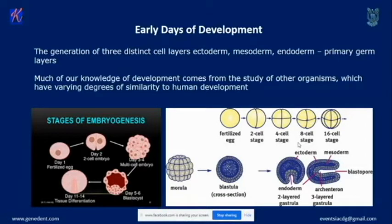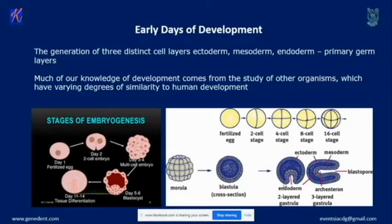Around 11 to 14 days of embryonic life, something called tissue differentiation begins. We have the ectoderm, mesoderm, and endoderm — the primary germ layers. All that we see ourselves as: hands, eyes, legs, muscles, nerves — everything you can think of in the human body starts developing from these three layers. Ectoderm is the outermost, mesoderm is in the middle, and a little more inside is the endoderm.